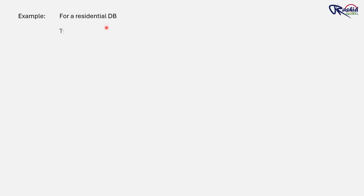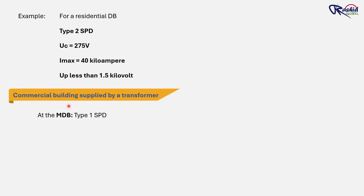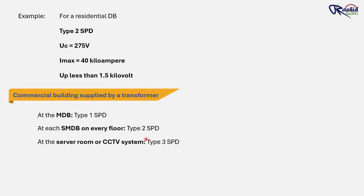SPD must be coordinated with the upstream breaker or fuse. For a residential DB, we usually select a Type 2 SPD with UC rating 275V, IMAX rating 40kA, and UP less than 1.5kV. For a commercial building supplied by a transformer: at the MDB, install Type 1 SPD to stop lightning surges directly from the sky; at each SMDB on every floor, install Type 2 SPD to stop switching surges; and at the server room or CCTV system, install Type 3 SPD to stop residual surges. This way the building is fully protected from any type of surge, whether from lightning or switching operations.